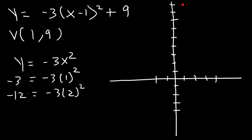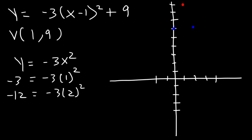If we plug in 2, 2 squared is 4 times negative 3, so the y value will change by negative 12. As we travel 1 unit to the right, we go down 3 units, and the same is true going left. This gives us the points (2, 6) and (0, 6). As we travel 2 units to the right, we go down 12 units, taking us to negative 3. So we get the point (3, negative 3), because 9 minus 12 is negative 3. And 2 to the left takes us to x equals negative 1, also down to negative 3.